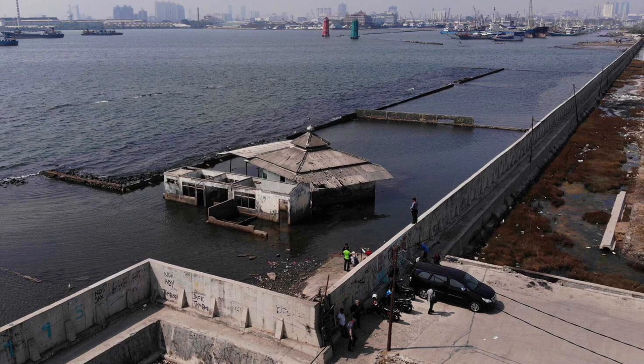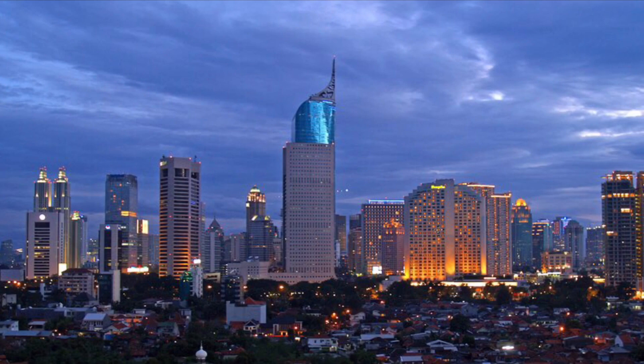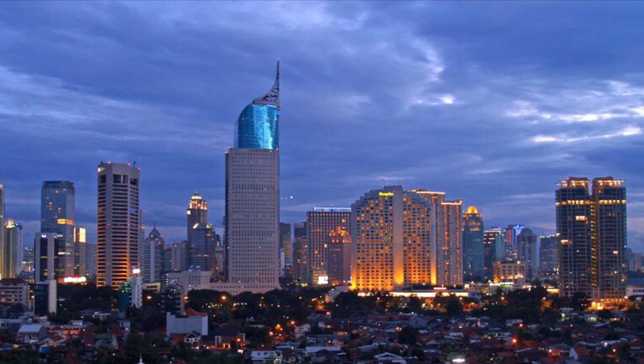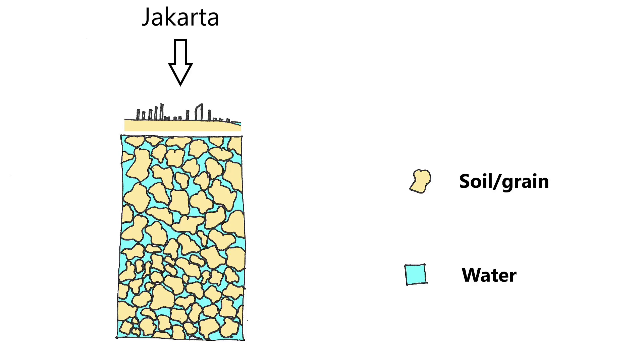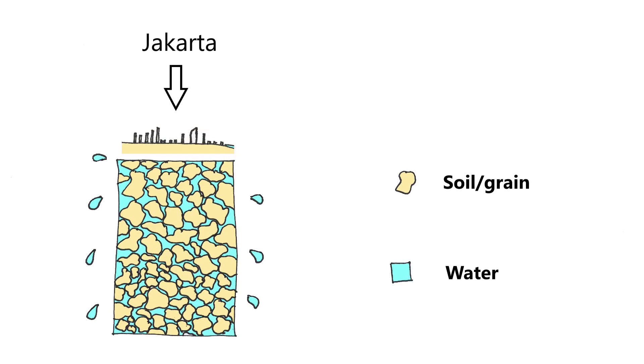In 1950, 1.4 million people were living in Jakarta. Today, this has increased to more than 10 million. Due to the increase in population, the weight of the city has increased substantially, and the volume of soil is being compressed.